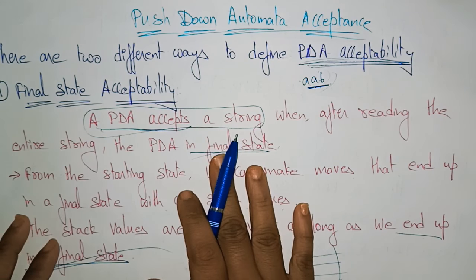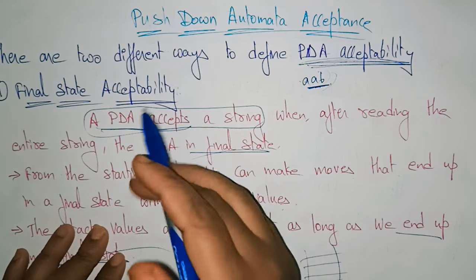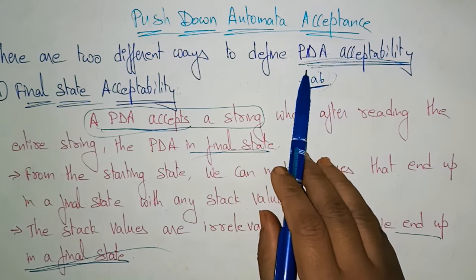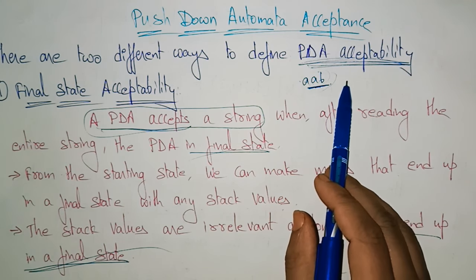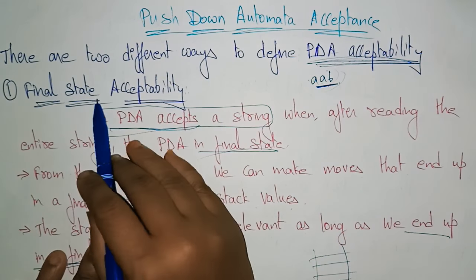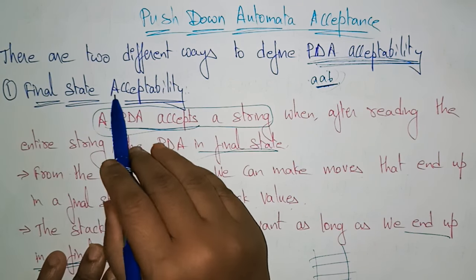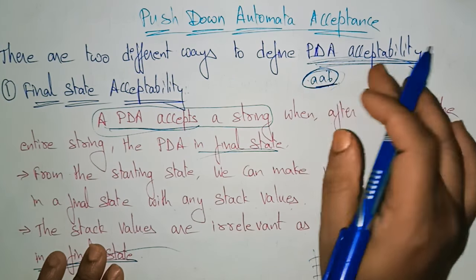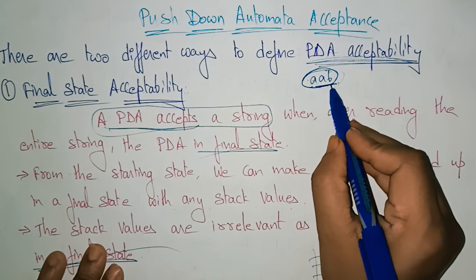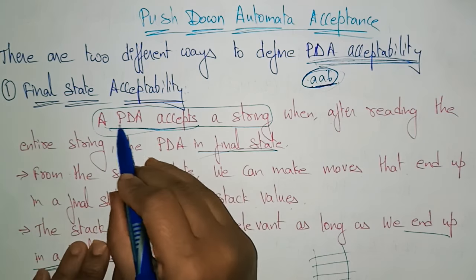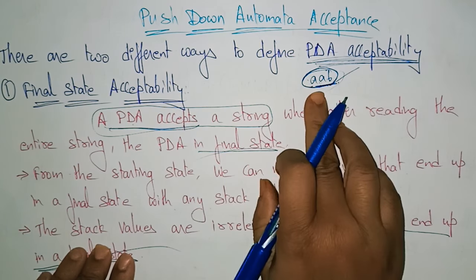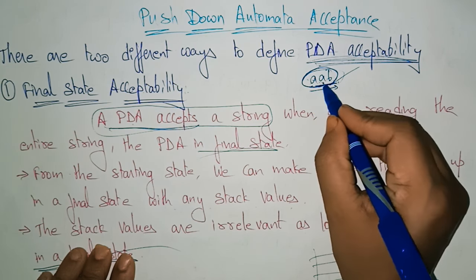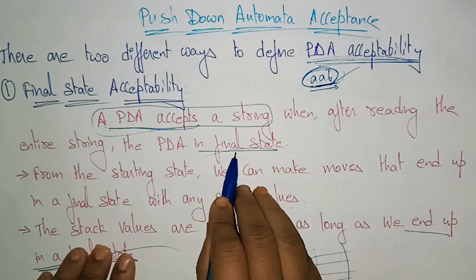There are two different ways to define pushdown automata acceptability. The first is final state acceptability. Whenever we reach the end of the string, we can say it is final state acceptability. For example, take the string 'aab' — the pushdown automata accepts this string when, after reading the entire string 'aab', the PDA is in a final state.